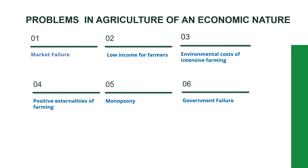We will now discuss the problems in agriculture of an economic nature. These include: market failure, low income for farmers, the environmental cost of intensive farming, positive externalities of farming, monopsony, and government failure.